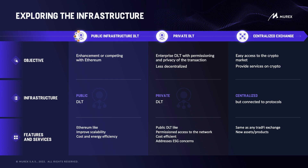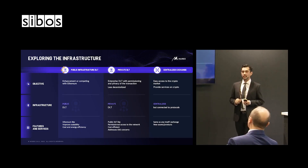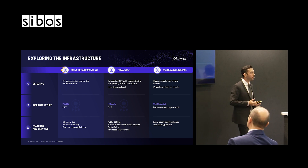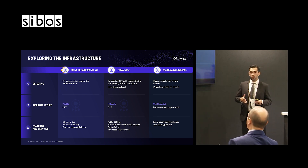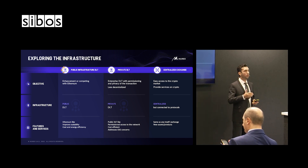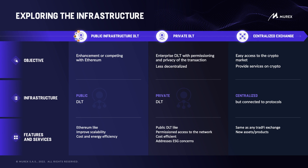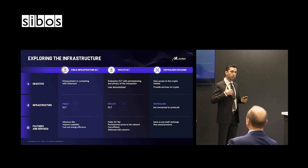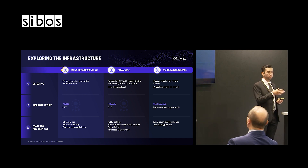Then came private DLTs with a different concept. For some business cases, you don't want everyone to see your transactions or join your network. So companies created enterprise DLTs with two layers of permissioning: who can join the network, and which transactions each actor can access. These private DLTs don't always require a consensus mechanism, making them cost-efficient. Some even address ESG concerns, targeting carbon neutrality.